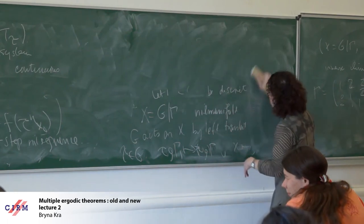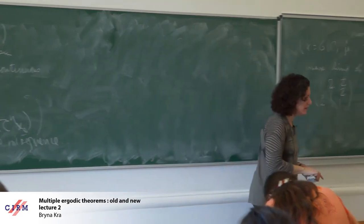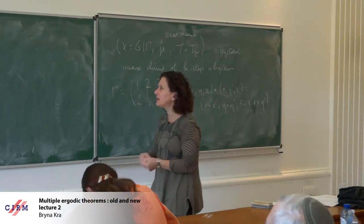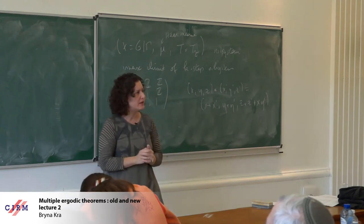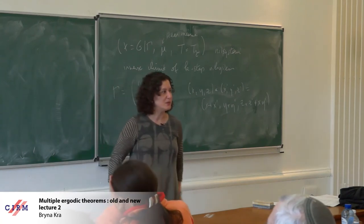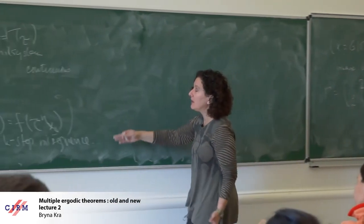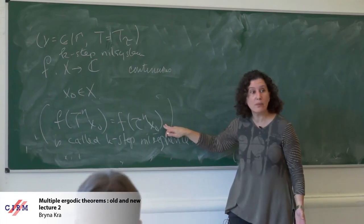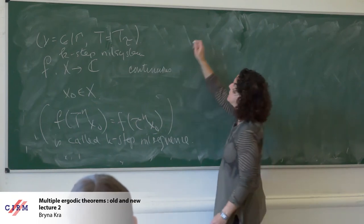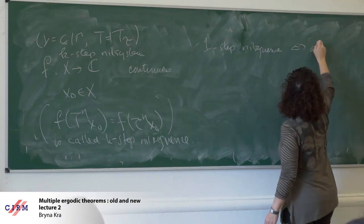I can assume, for example, that x_0 is the identity element, and I can also make assumptions about connectedness and simply-connectedness that make various applications easier. What is a one-step nil sequence? If it's a one-step nil sequence, you're looking at the orbit in a compact abelian group — so this is an almost periodic sequence.